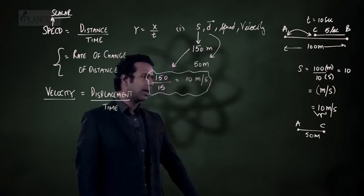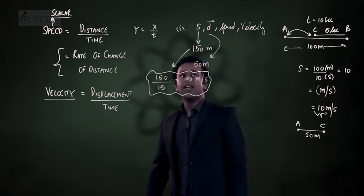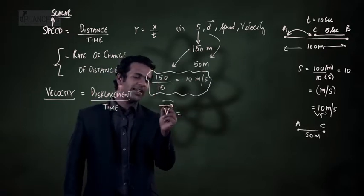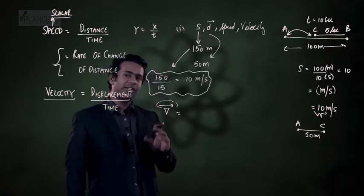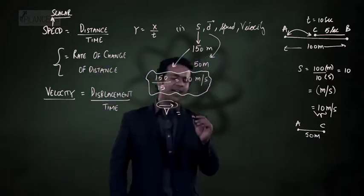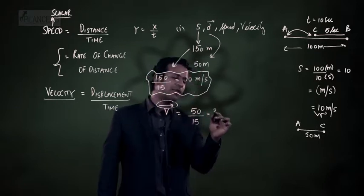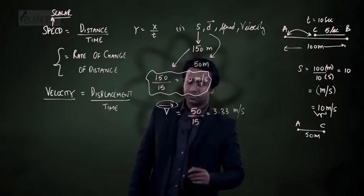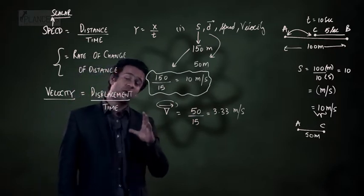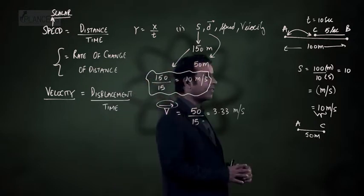For speed: distance traveled is 150 meters divided by time 15 seconds, giving 10 meter per second. For velocity, we use displacement of 50 meters divided by 15 seconds. For the magnitude, that gives 3.33 meter per second. So during this journey the particle moved at a speed of 10 meter per second, but its velocity is only 3.33 meter per second.